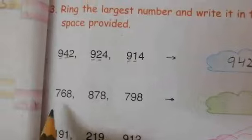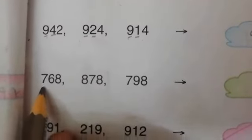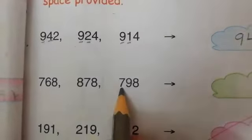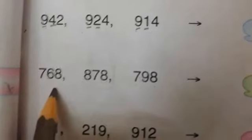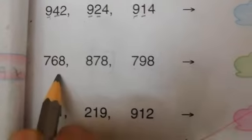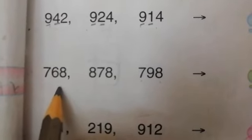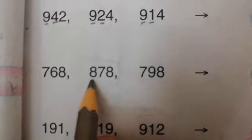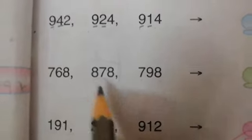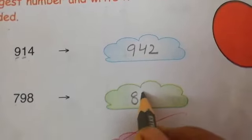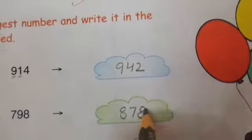Read 768, 878, 798. Now which number is the largest number? Which 100 is largest? 8. Then we will write here 878.